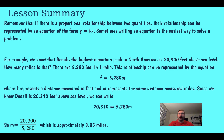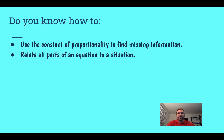Had we wanted to go backwards and it told us how many miles, we could have used our reciprocal equation to figure out how many feet that was. After this lesson, do you know how to use your constant of proportionality to find missing information?